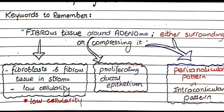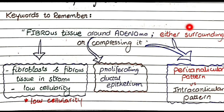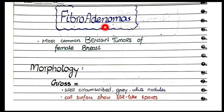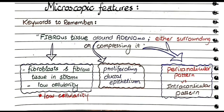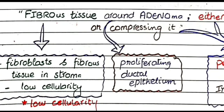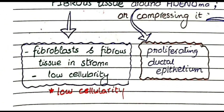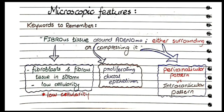For the microscopic features of fibroadenoma, the keywords are: fibrous tissue surrounding or compressing adenoma. The name itself — fibroadenoma — tells the story: 'fibro' refers to fibroblasts and fibrous tissue in the stroma, with low cellularity. This is important because, in contrast, phyllodes tumor has a highly cellular stroma with many proliferating mesenchymal cells.